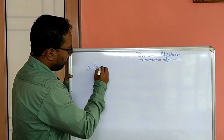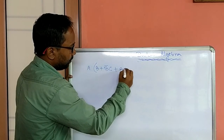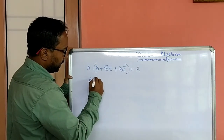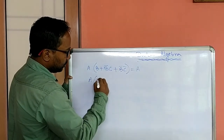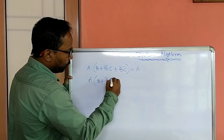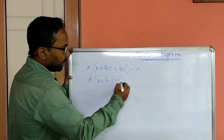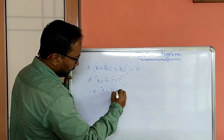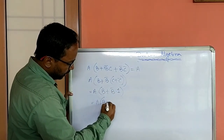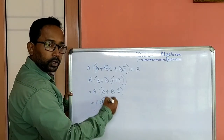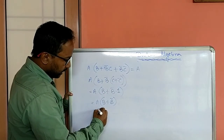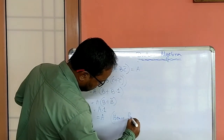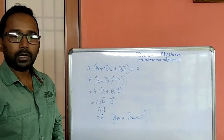ab plus b not c plus b not c not equals a. Take this left hand side expression and simplify it: ab plus b not c plus b not c not. From these two if I take b not common, then c plus c not equals 1 according to the complementarity law. So here we are getting a into b plus b not into 1. So a into b plus b not. Now b plus b not equals again 1. So that 1 into a equals a. Proved.